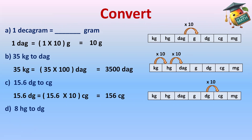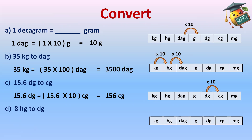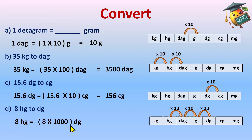Part D: convert 8 hectogram to decigram. Remember: DG is decigram and DAG is decagram. Using the mnemonic, make the chart. From hectogram to decagram, then decagram to gram, then gram to decigram — that is 3 steps moving forward, so we multiply by 1000. 8 hectogram equals 8 multiplied by 1000, which is 8000 decigrams.